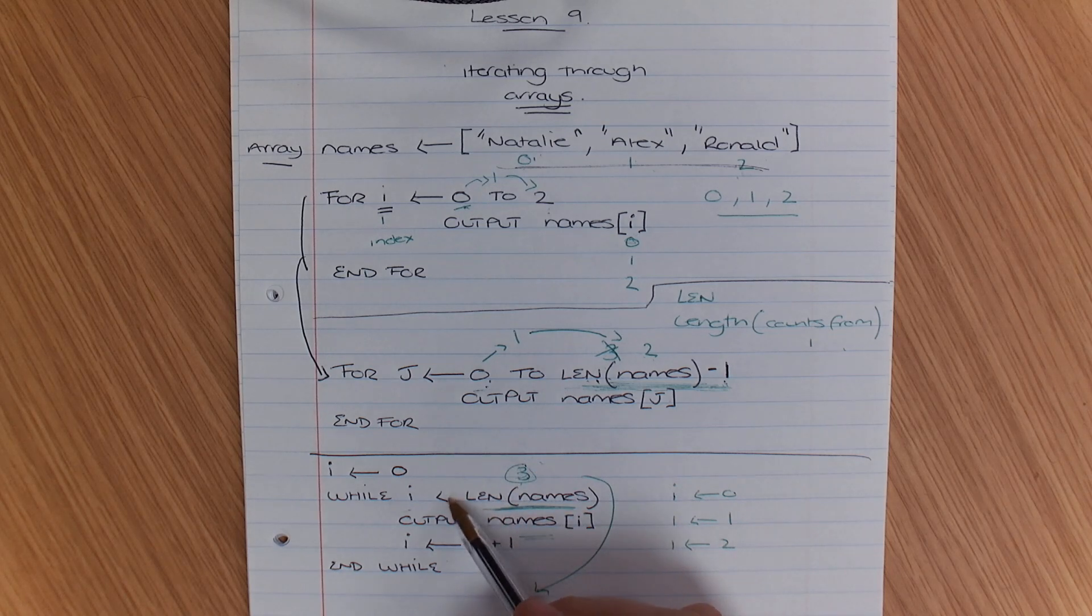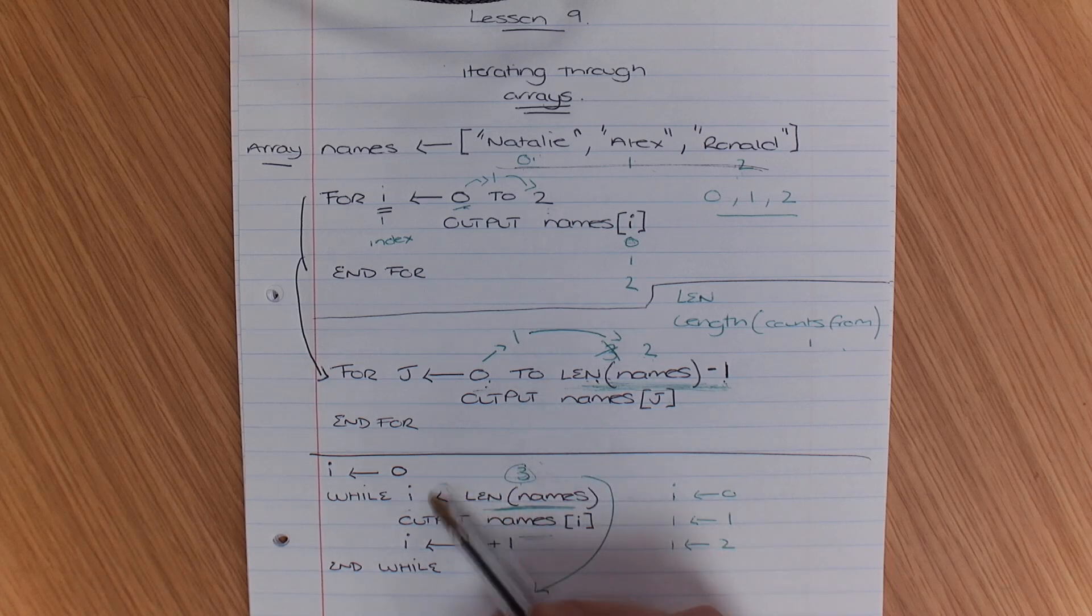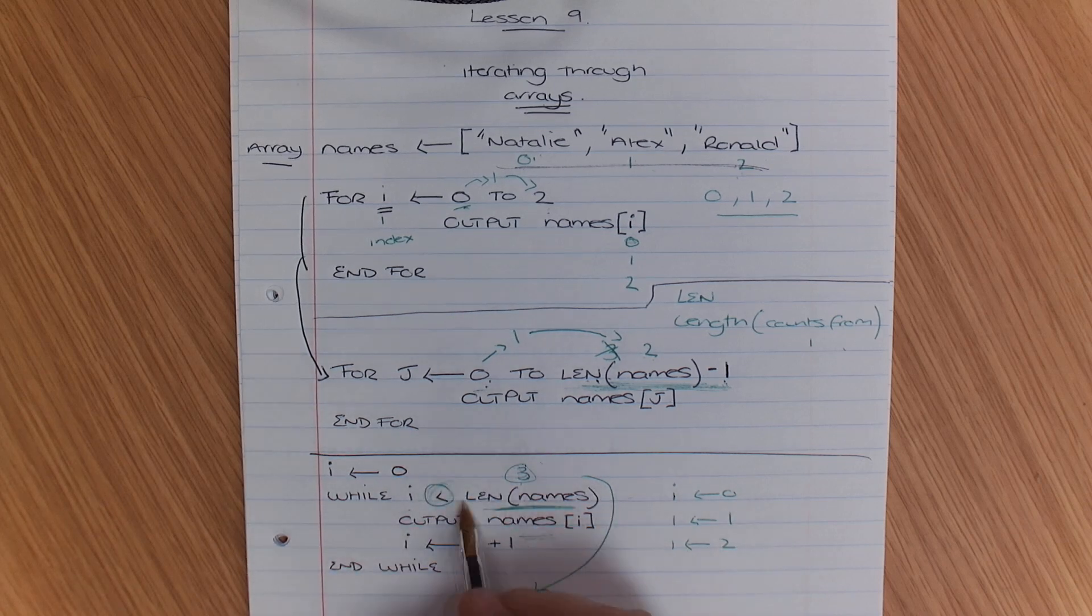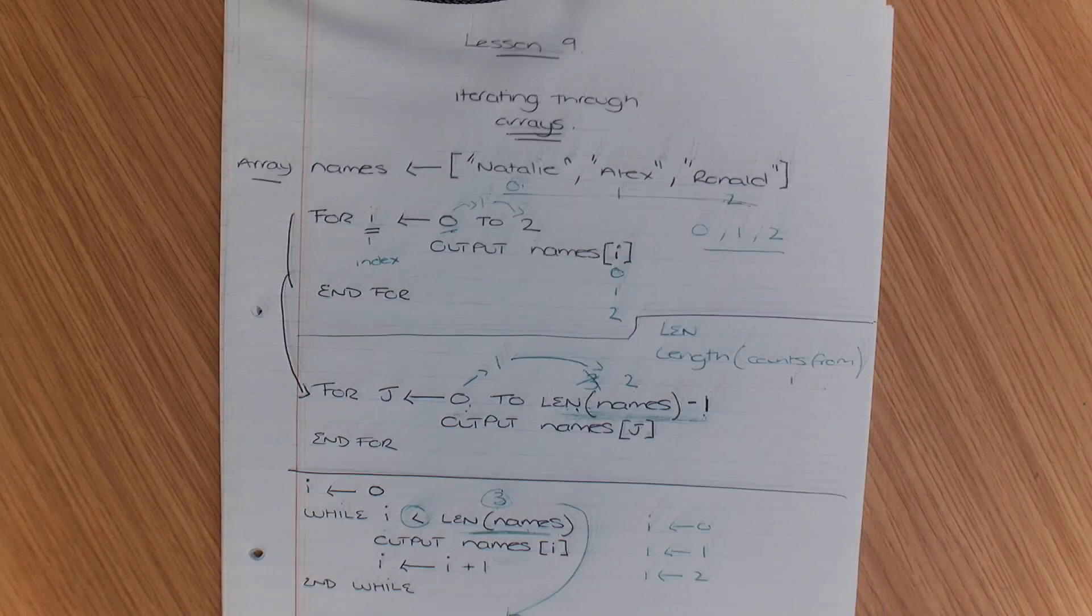Or if you've got an equal to condition here, you might need to change your outcome there. So just be careful. It depends on your operator here. It depends on what symbol you've used here, on whether you need to do the minus 1. So that's how you iterate through an array.